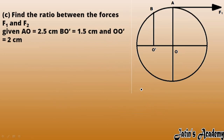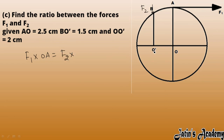For the third part, we have to find the ratio between forces F1 and F2. Using the same moment equilibrium: F1 multiplied by perpendicular distance OA equals F2 multiplied by OO'. Rearranging for the ratio F1 by F2 gives us OO' over OA.